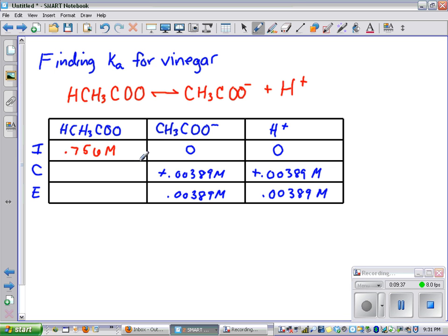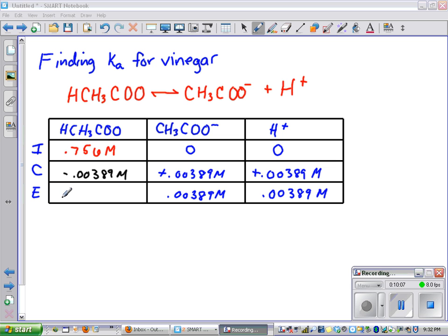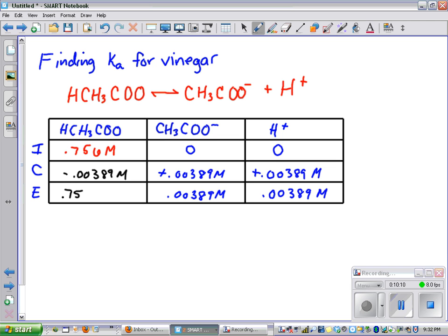Now, if we look at this table, if we added this much to the products, we must have taken away from the reactants. So to determine the amount that we have at equilibrium, we simply take 0.756 minus 0.00389, and we get 0.75211 molar.